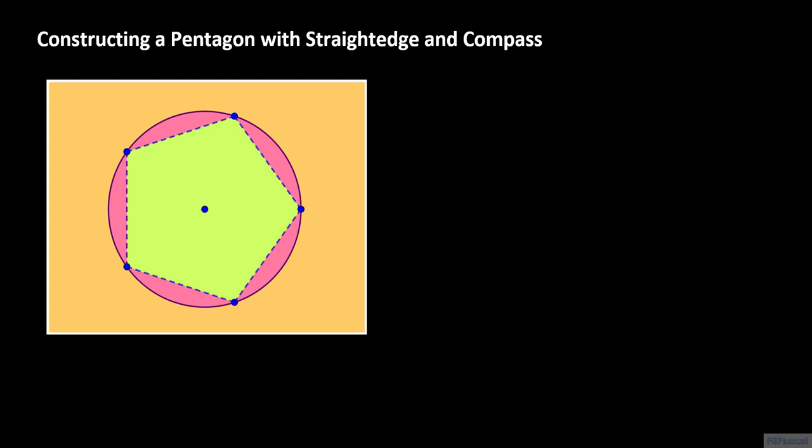The key to the construction of our pentagon is the construction of the number negative 1 plus the square root of 5, all over 4, which is equal to cosine of 72 degrees.